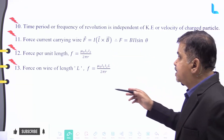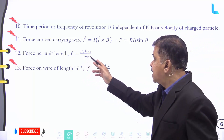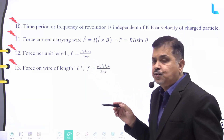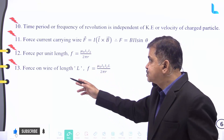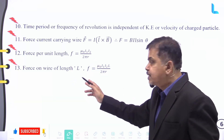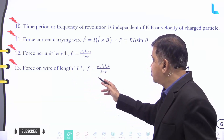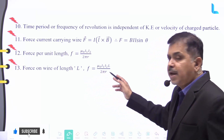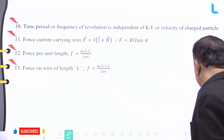The force per unit length F is given by mu naught i1 i2 divided by two pi r. The force on a wire of length capital L is given by F equals mu naught i1 i2 L divided by two pi r.